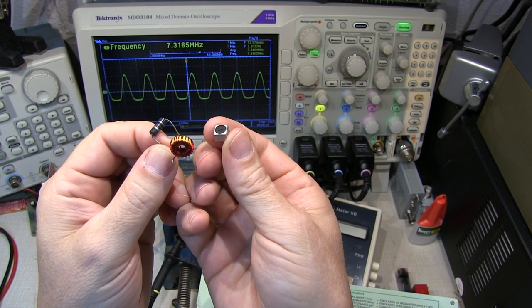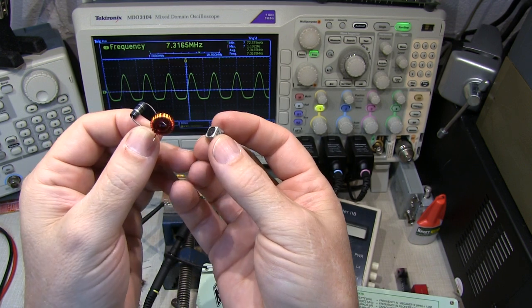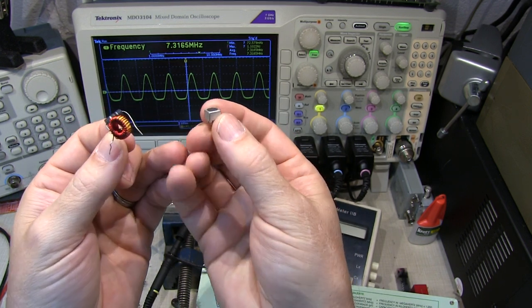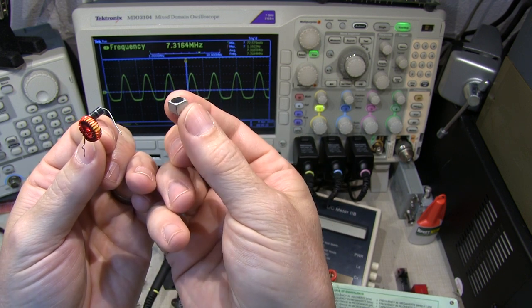Today's video is all about measuring the value or inductance of unknown coils and the resonant frequency of unknown parallel tuned circuits like little IF transformers like this one here.